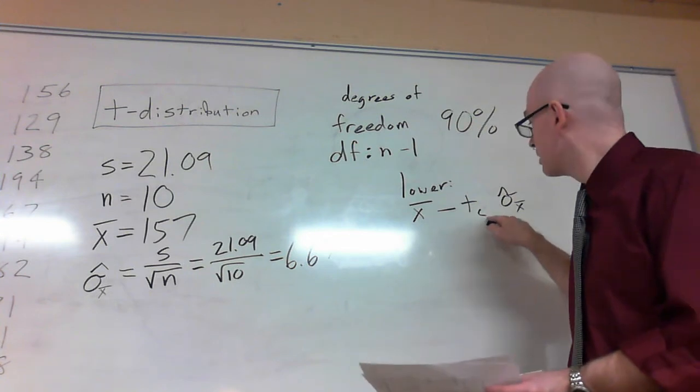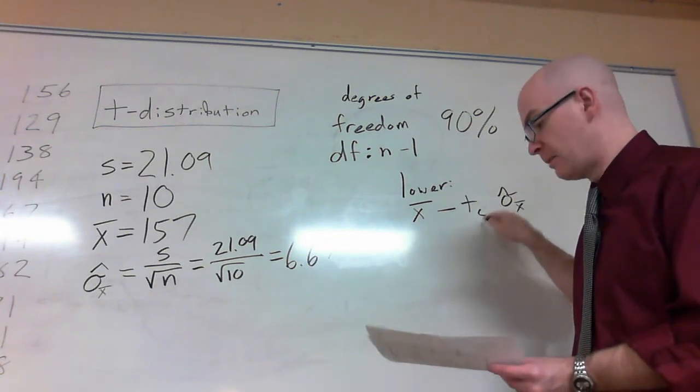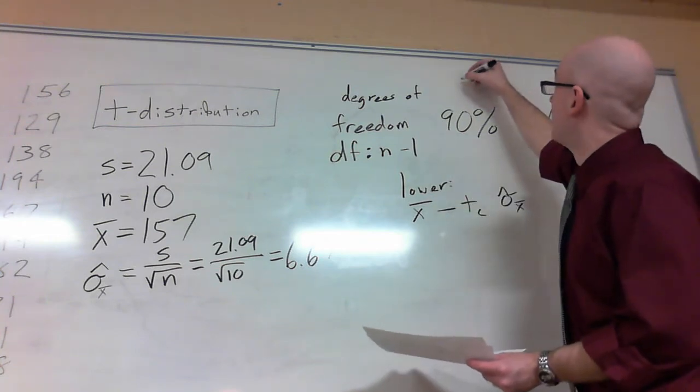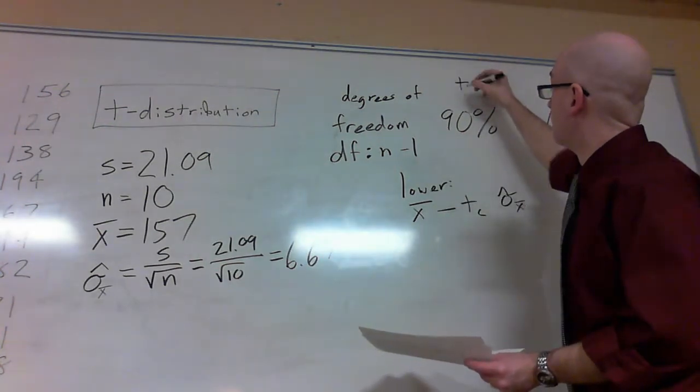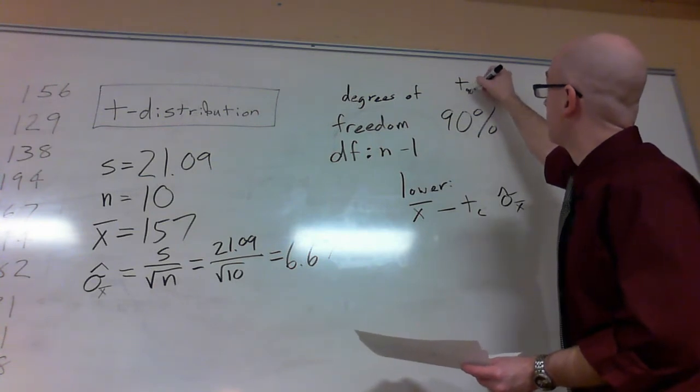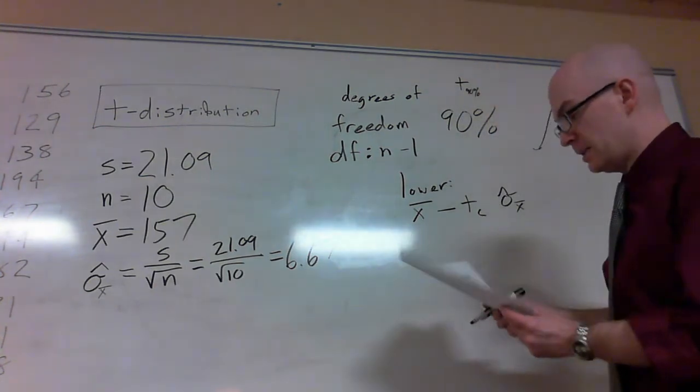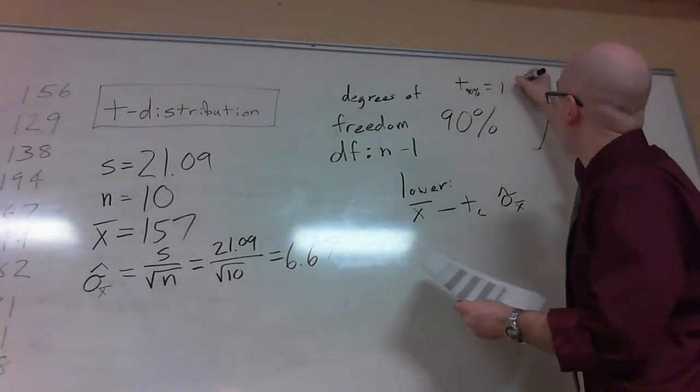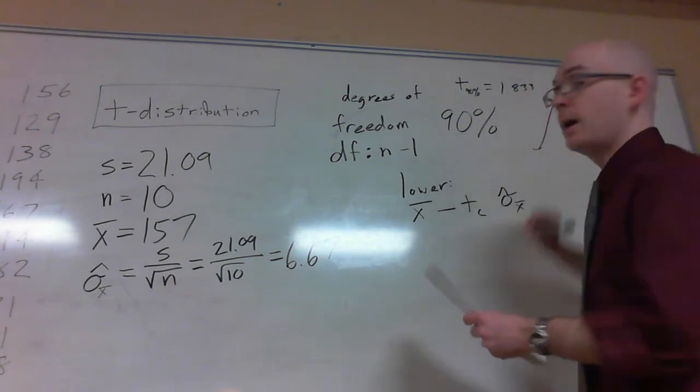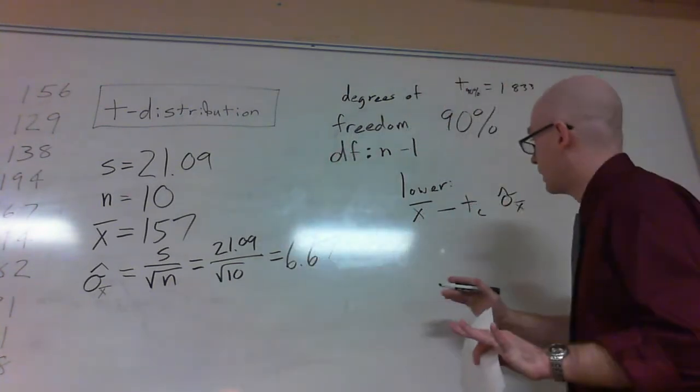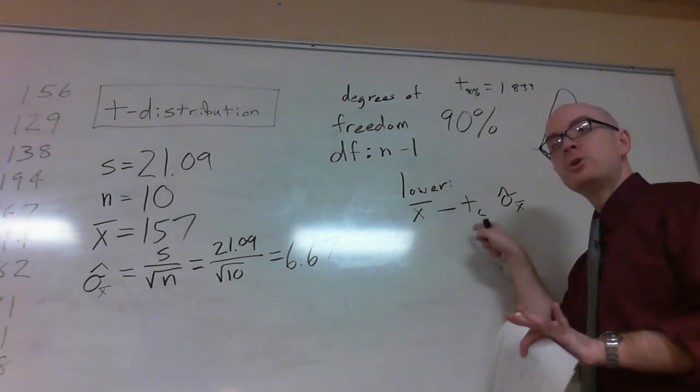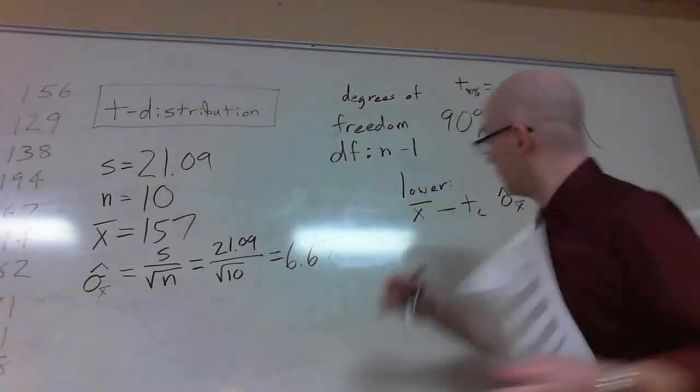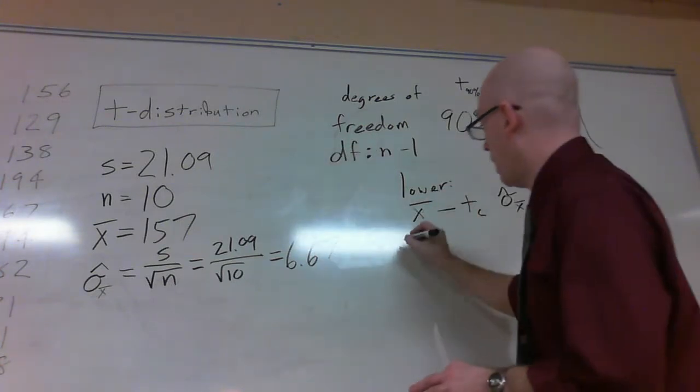Now notice I put a c down there. That just is telling me that's based on my level of confidence. So if I want a confidence level of it being in this range of 90%, I look at my table and it says that is 1.833. So given that is 1.833, I can plug that into here. I already know this. I know this. Boom!